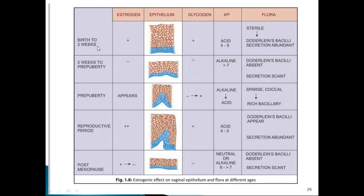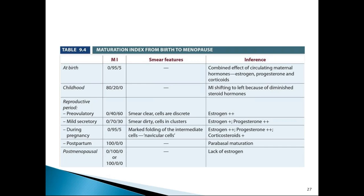From birth to two weeks, due to maternal hormonal influence, estrogen is present, which attracts Doderlein's bacillus. Due to excess glycogen, Doderlein's bacillus converts glycogen to lactic acid, making vaginal pH acidic. From two weeks to pre-puberty there is no hormonal influence, no glycogen, and vaginal pH is alkaline. Pre-puberty again due to hormonal influence the pH becomes acidic again, and during the reproductive period estrogen maintains acidic pH. Post-menopause it returns to a pre-pubertal alkaline state.